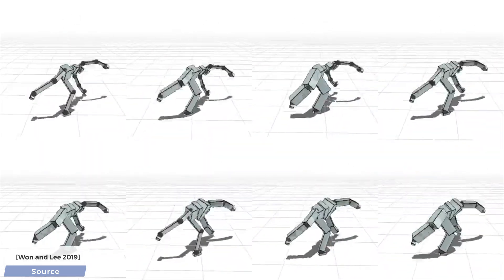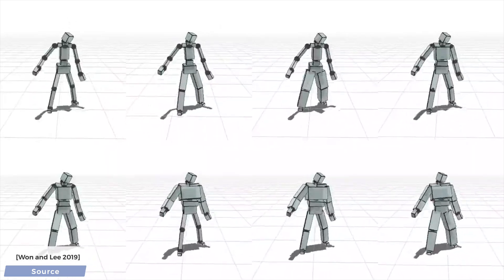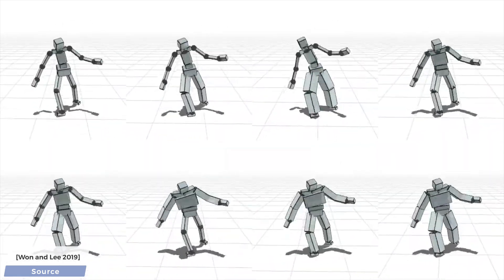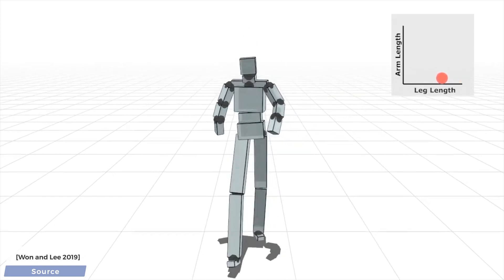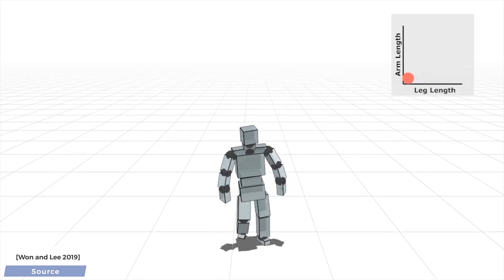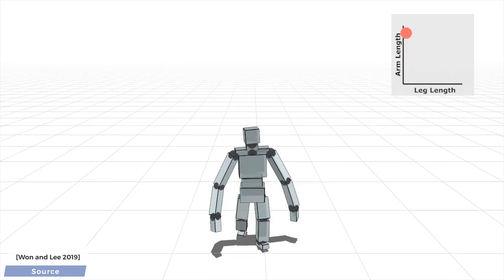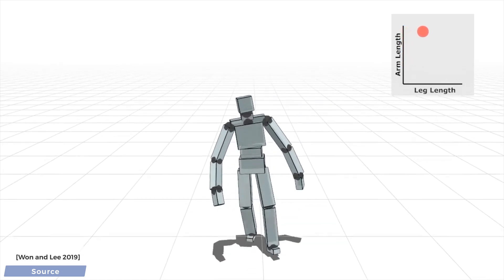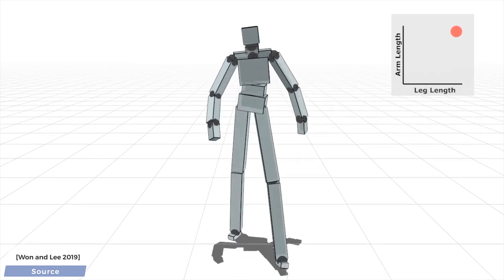Now, it's great that one algorithm can adapt to all of these body shapes, but it would be reasonable to ask, how much do we have to wait for it to adapt? Have a look here. Are you seeing what I am seeing? We can make changes to the body on the fly, and the AI adapts to it immediately. No retraining or parameter tuning is required. And that is the point where I fell off the chair when I read this paper. What a time to be alive!